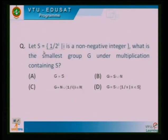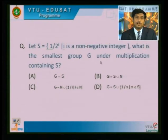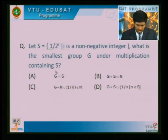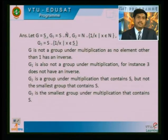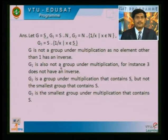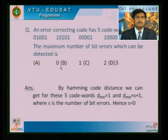Then S = {1/2^i : i is a non-negative integer}. What is the smallest group G under multiplication containing S? You get G = S, and G₁ = S ∪ ℕ gives the answer. These are important things to remember.